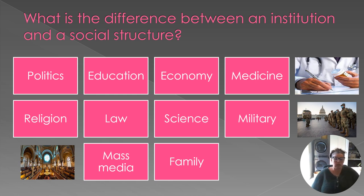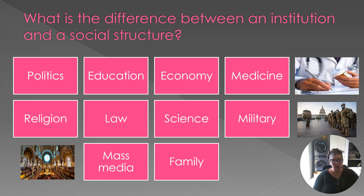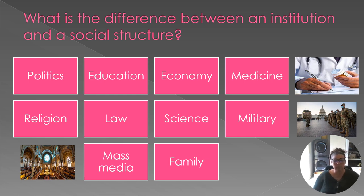A few examples of social structures and institutions — most of them: politics, education, economy — these are the big ones. Medicine is a good one to think about. We have Eastern medicine and Western medicine, and those are two different social structures with different contexts, expectations, norms, values, and even mores. You can see how culture can change institutions. Others include religion, law, science, military, mass media, and family.